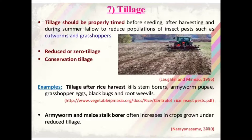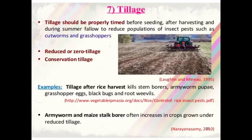The next practice is tillage. Tillage should be properly timed before seeding, after harvesting, and during summer fallow to reduce populations of insect pests such as cutworms and grasshoppers. Reduced tillage, zero tillage and conservation tillage are also important in controlling various pests. Examples include tillage that kills stem borer, armyworm pupae, grasshopper eggs, black bugs and root weevils. However, armyworm and maize stalk borer often increase in crops grown under reduced tillage.